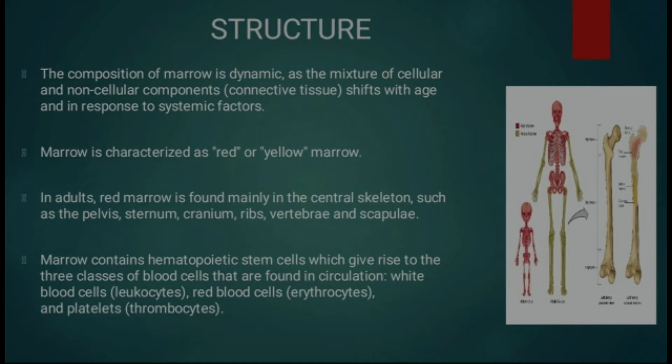Jaise ki humne introduction mein padha, ye do types ke hote hain: red aur yellow marrow. Adults mein red marrow central skeleton mein yaani pelvis, sternum, cranium, ribs, vertebra, aur scapula mein paaya jata hai. Marrow hematopoietic stem cells ko contain karta hai jo aage jake blood cells ki teen classes mein distribute hote hain: white blood cells yaani leukocytes, red blood cells yaani erythrocytes, aur platelets yaani thrombocytes.